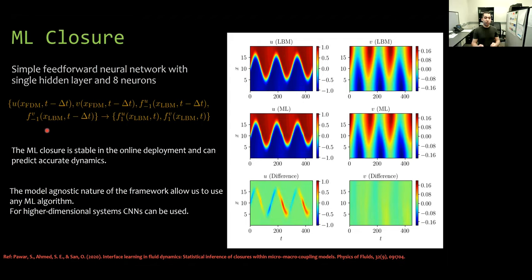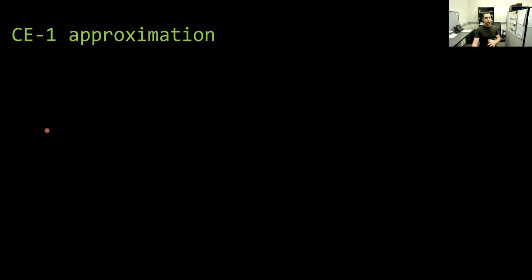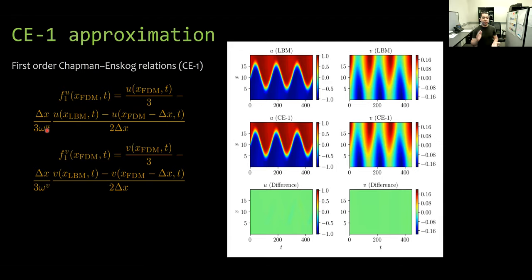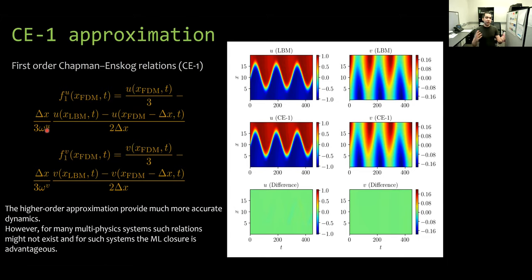We also highlight that the framework is quite agnostic to the model, so we can use any machine learning tool or algorithm to achieve this coupling. For example, for high-dimensional problems, we can use convolutional neural network or CNN. Just to be fair, we highlight that in addition to the zero-order approximation, there is a first-order approximation which yields very accurate prediction without any machine learning closure. But at the same time, we highlight that these high-order approximations are not always available for complex problems, and the machine learning closure can really help in these situations.